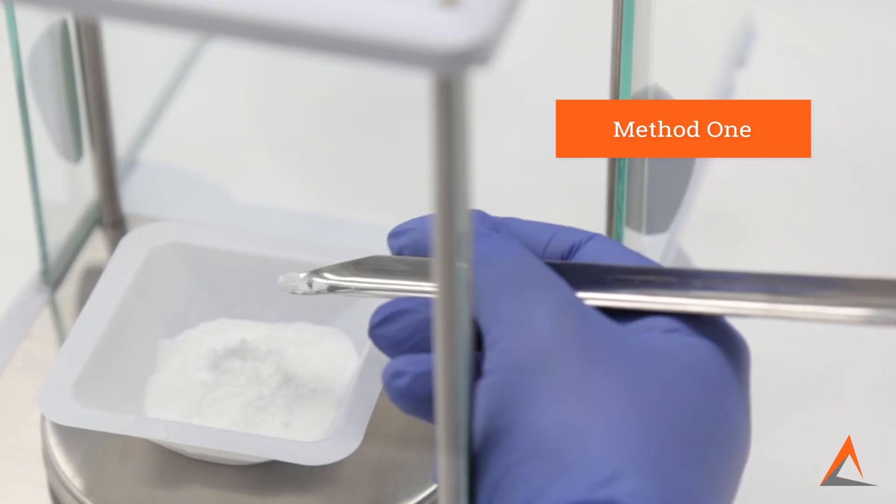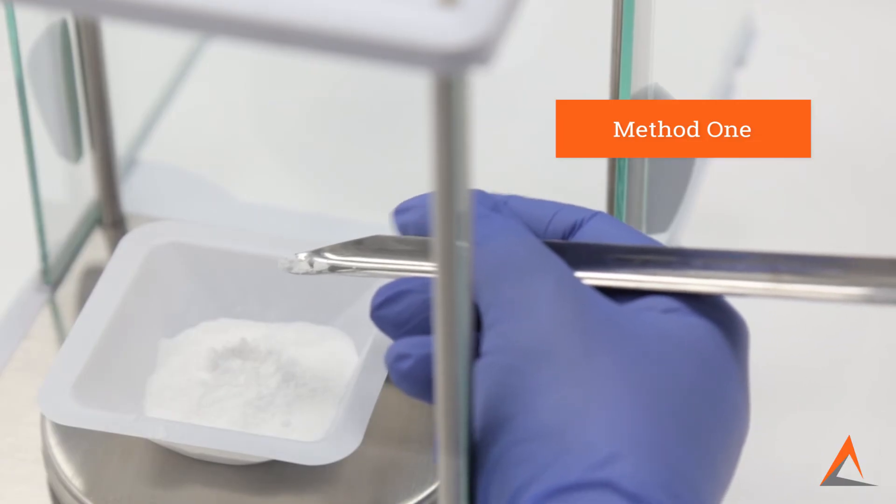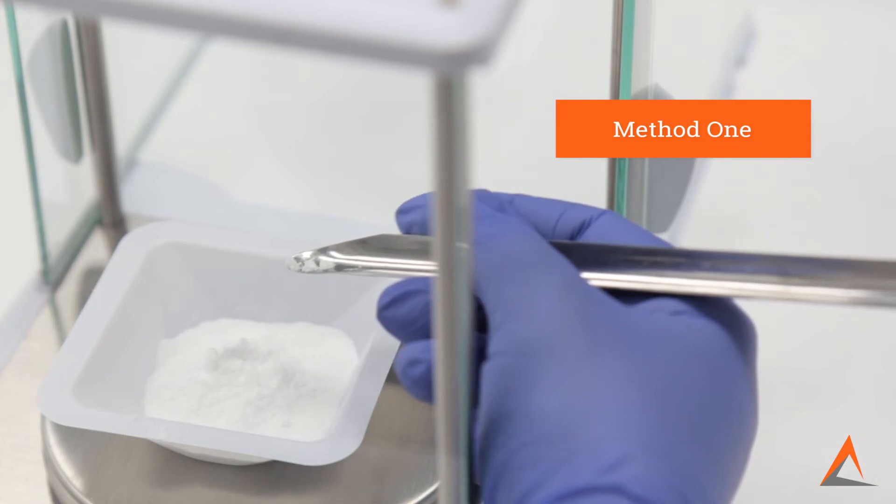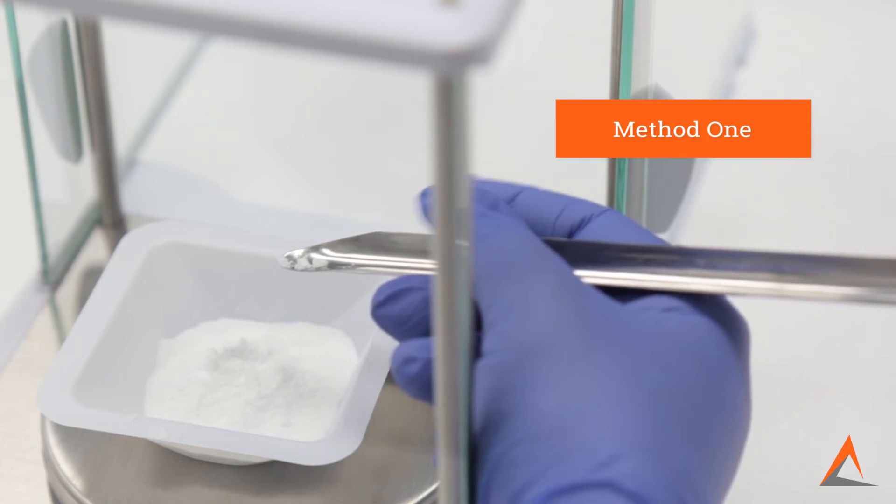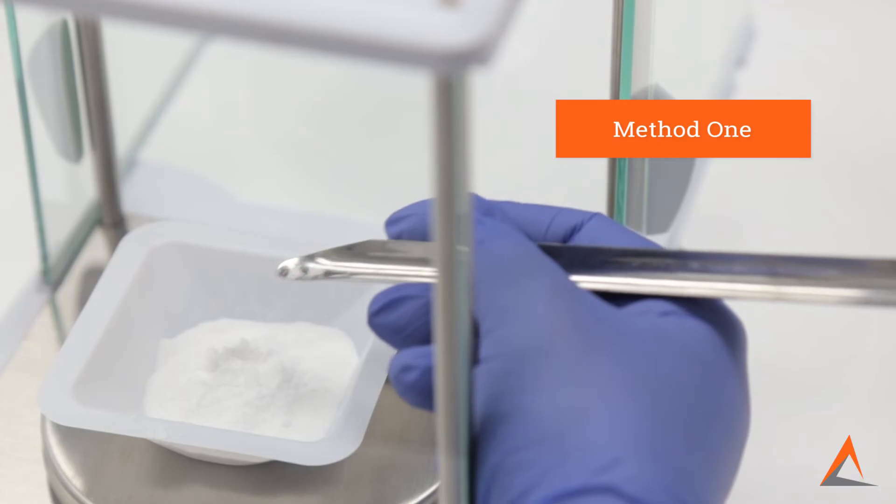Now, when you lightly tap your index finger against the spatula, there is less movement and, in turn, more control of the spatula. This will allow a smaller amount of powder to fall into your weighing container.